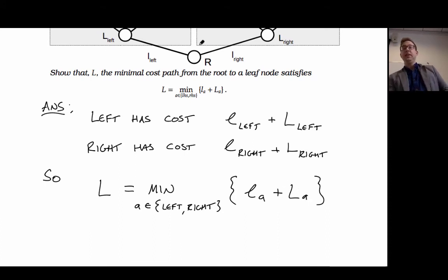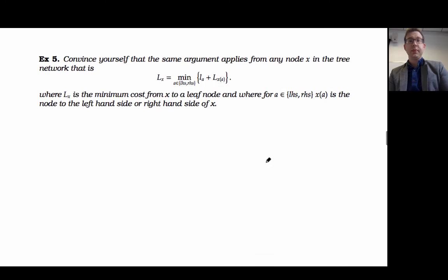Another thing to notice is I didn't need to do this calculation for the root node. So in the next bit, and you can do this in the comfort of your own home a little bit, is that you should notice - convince yourself the same argument applies for any node. So any circle that I've drawn in the tree network. That is, the L of X is the minimum of the cost of the movement plus the cost of the state that I arrive at from that movement.